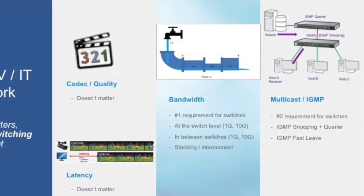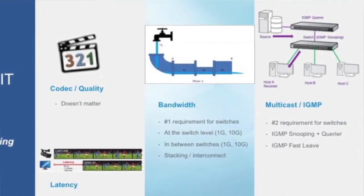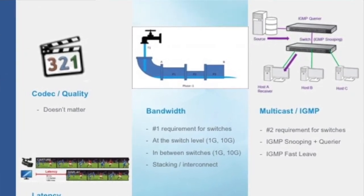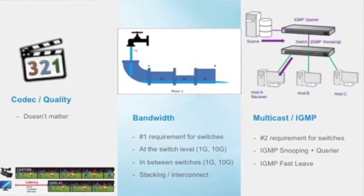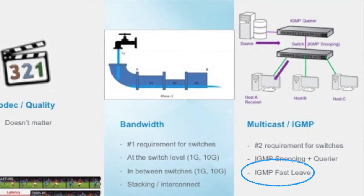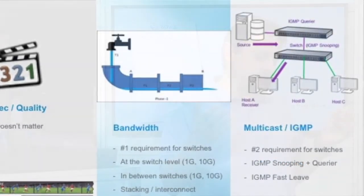The second important parameter after bandwidth is multicast. Without IGMP snooping and IGMP querier, you just can't make video over IP happen. So you need a 10 gigabit switching platform capable of IGMP snooping and IGMP querier. There is a third requirement called IGMP fast leave. For instance, when you switch channels on IPTV, you want it to happen fast. IGMP fast leave accelerates the IGMP query and snooping process so that channel selection happens instantly.